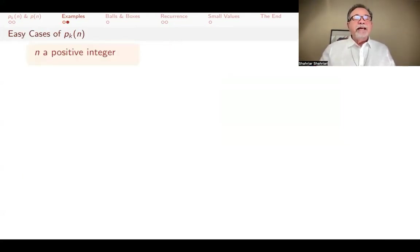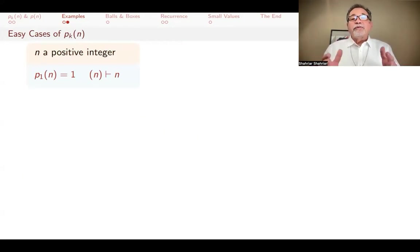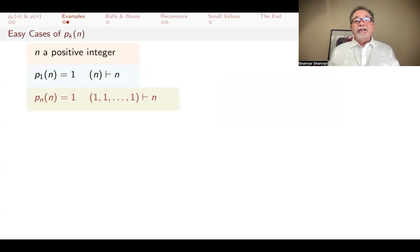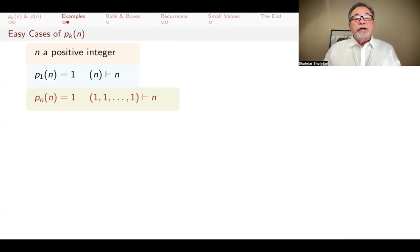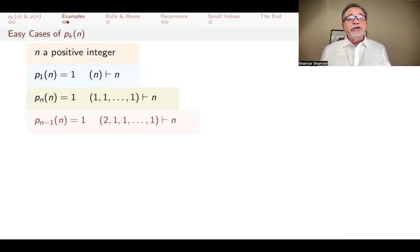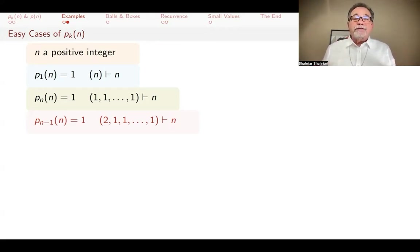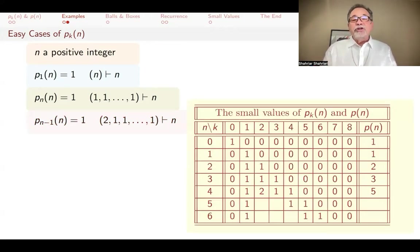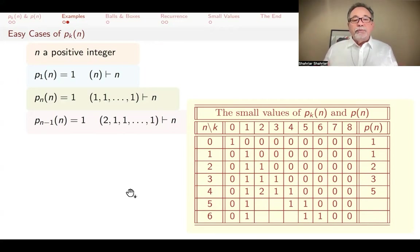Now let's look at some easy cases. If n is a positive integer, the only way to partition it into one part is to put everything together. If you want to partition n into n parts, there's only one way — put all balls into separate piles. If you want to partition n into n minus one parts, the only way is to have one pile of size two and all the other piles of size one. Given that, we can find small values of these partition numbers, but further along it becomes more complicated to calculate.